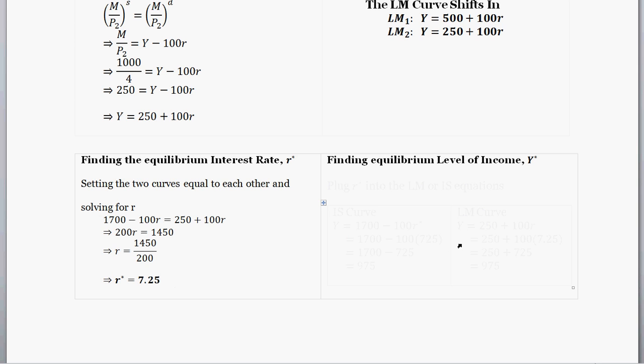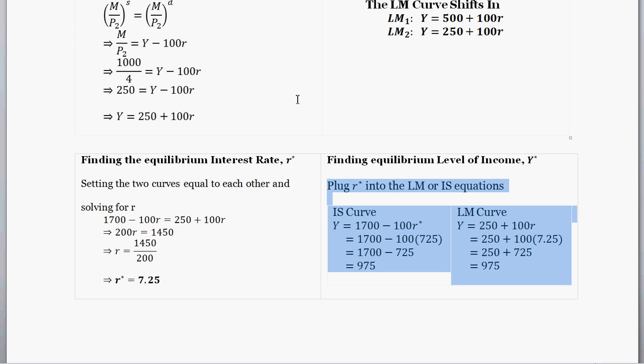And then, following our same basic steps that I've done maybe two or three times before, we find the equilibrium level of Y. So our Y star is now 975.